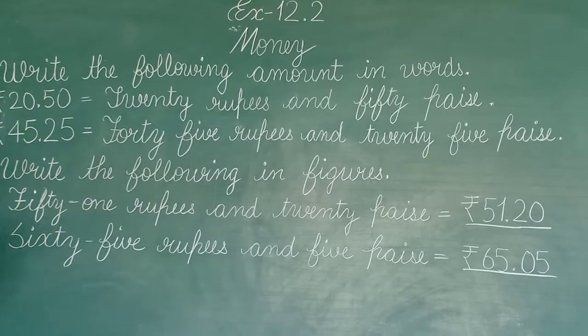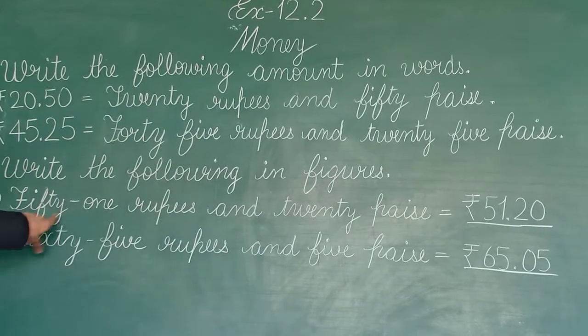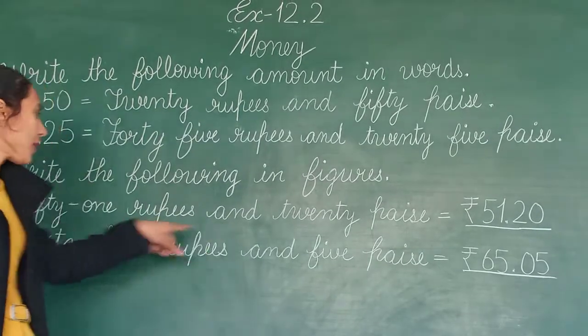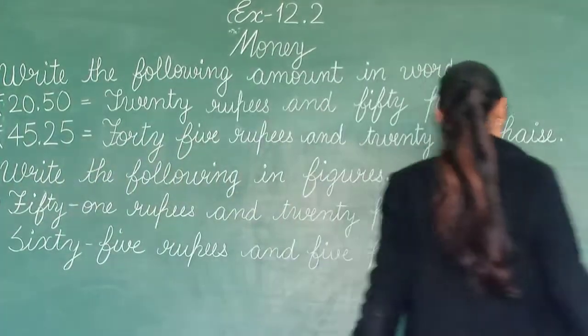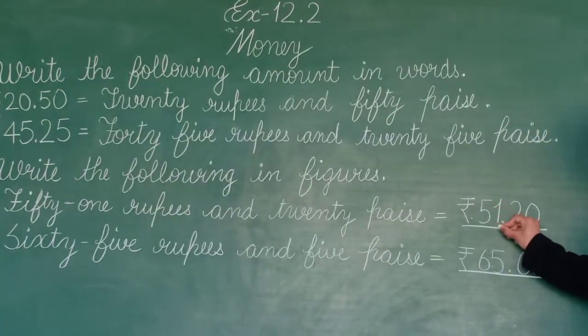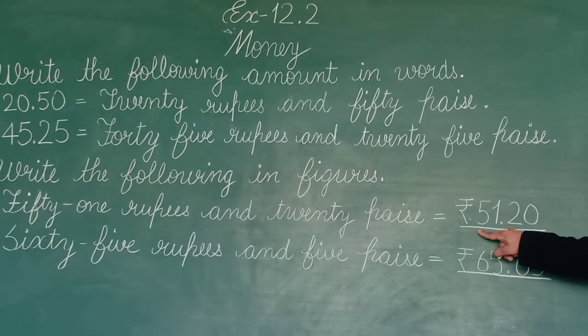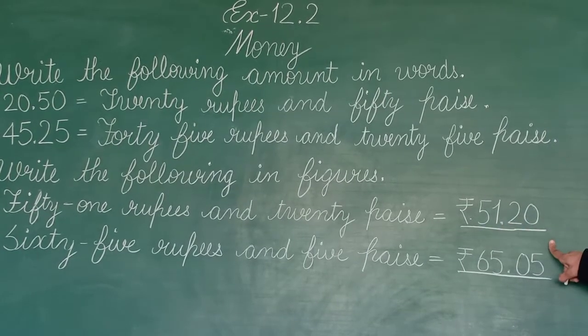First one is fifty-one rupees and twenty paise. So we write rupees 51.20 paise.